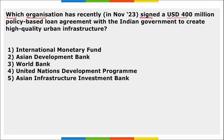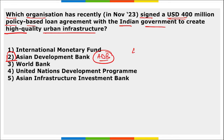Next: which organization recently signed a 400 million dollar policy-based loan agreement with the Indian government to create high-quality urban infrastructure? It is the Asian Development Bank (ADB). This program is India's Urban Reform Agenda to create high-quality urban infrastructure, improve service delivery, and promote efficient government systems. The loan has a principal repayment period of 12 years.